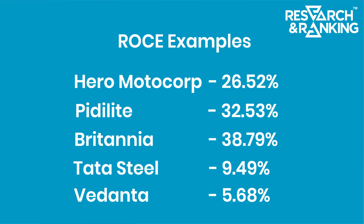Companies such as Hero Motocorp, Pidilite, and Britannia are low on debt levels, which is why their ROCE is significantly higher. That covers the basics of ROCE.